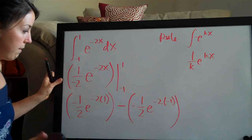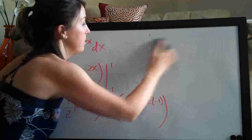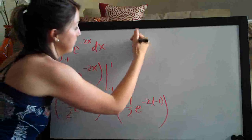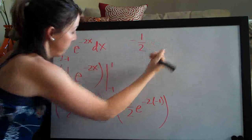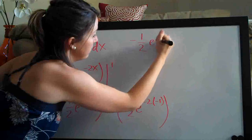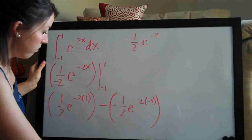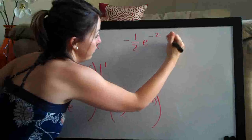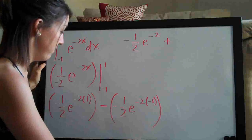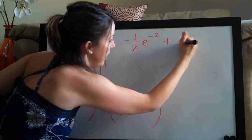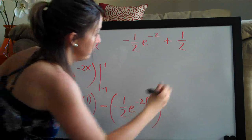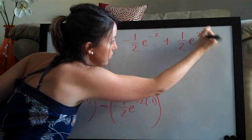So let's just go ahead and simplify this here. We will have negative 1 half e to the negative 2 and then since we have minus a negative, that will change to a positive. So plus 1 half and then we have negative 2 times negative 1. So that ends up being a positive 2. So we'll just have e to the 2.